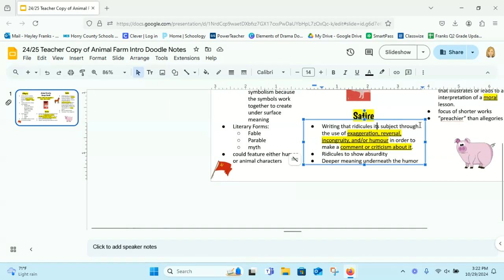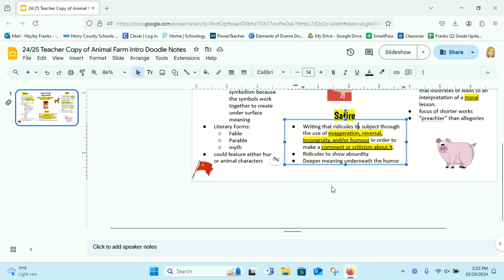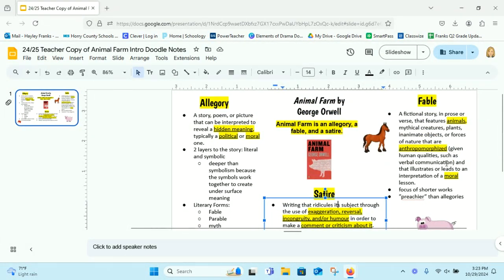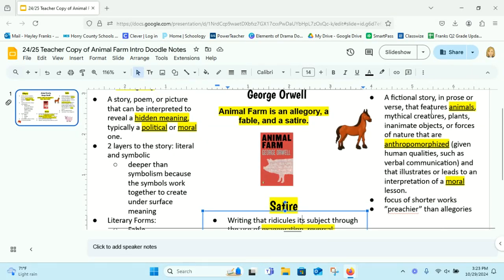Our last part of notes here is fable. Fable is a fictional story, which can be in prose or verse, prose or poem, that features animals, mythical creatures, plants, inanimate objects,